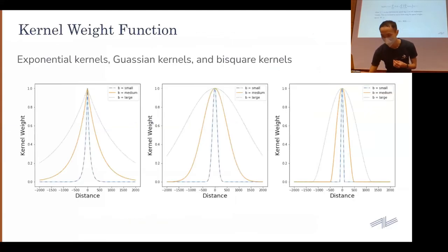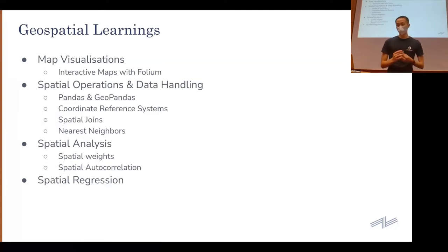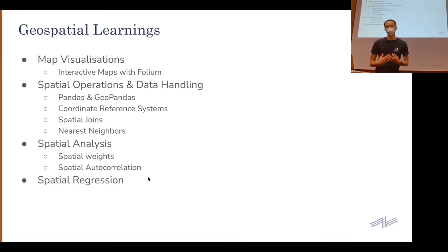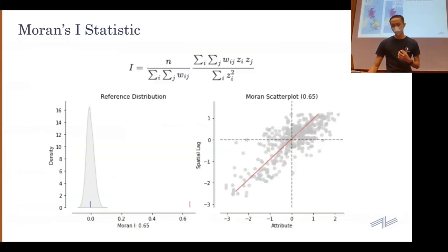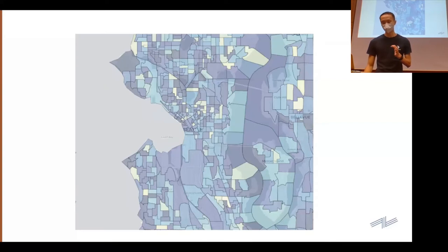Let me go back to the summary slide. I showed you map visualization, which can be done using Folium. Then I talked about pandas and GeoPandas, how we can use them to perform spatial operations and data handling. After that, once we have this base foundation, we move on to more advanced spatial analysis — spatial autocorrelation, how to weight neighbors differently using spatial weights. Finally, using all this information, we use spatial regression to perform predictions on our map data.